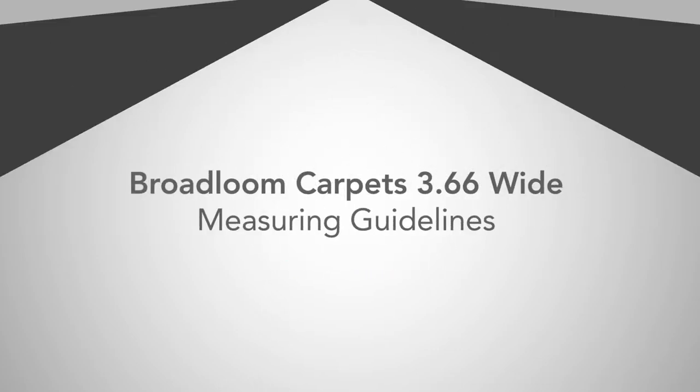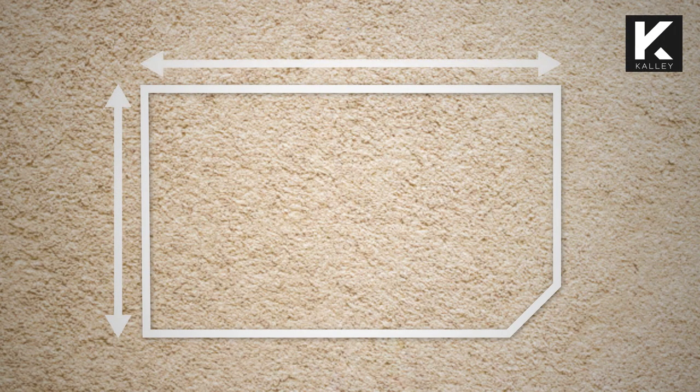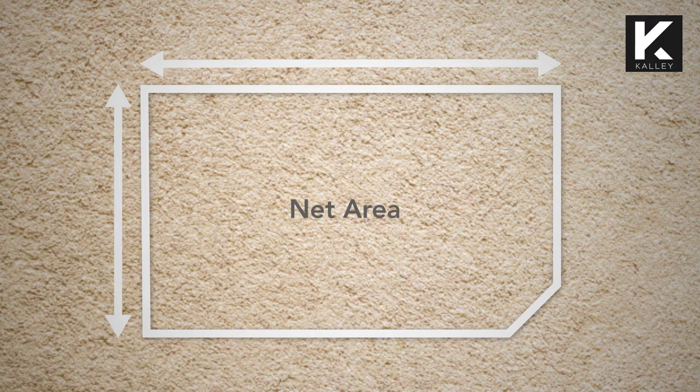Broad loom carpets are 3.66 metres wide. When measuring, you must measure to the furthest point of the room. Always check the net area of your room.